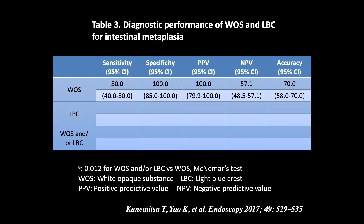This is a summary of diagnostic performance of White Opaque Substance and light blue crest for intestinal metaplasia. White Opaque Substance alone: sensitivity is not so high, at 50%. However, specificity is really high, as much as 93.8%.